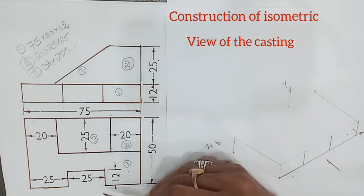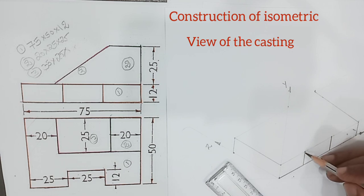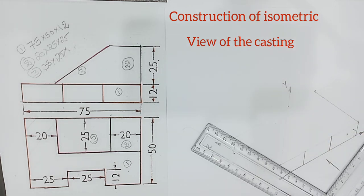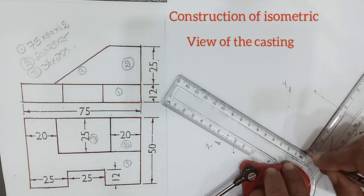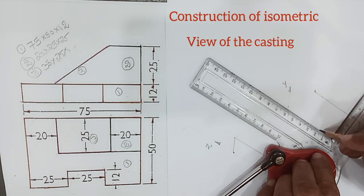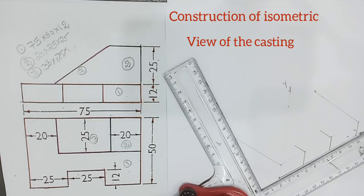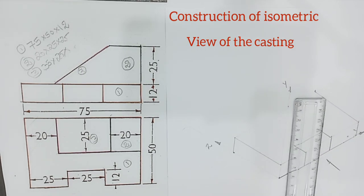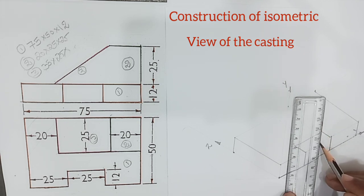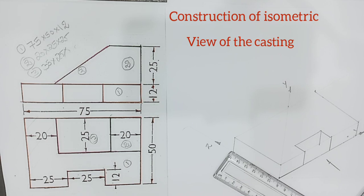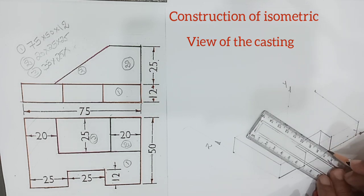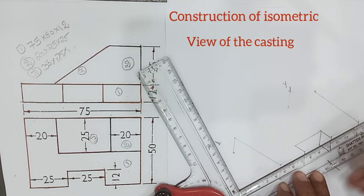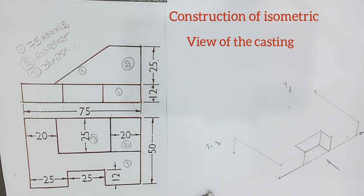In the breadth direction it is 12 mm, so from here at a distance of 12 mm, and here also 12 mm. Then draw lines parallel to x-axis, parallel to y-axis from this point, and parallel to z-axis. Then parallel to x-axis again — drawing of the first part is now completed.